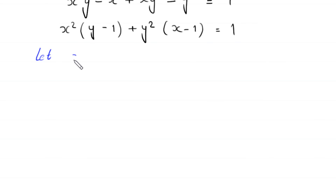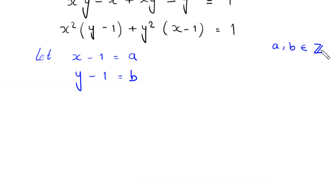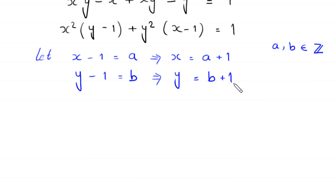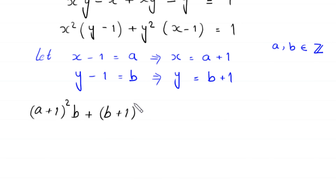Now we let x - 1 = a and y - 1 = b, where a and b are integers. This means x = a + 1 and y = b + 1. Substituting into the equation, we replace x with (a+1) and y with (b+1): (a+1)²·b + (b+1)²·a = 1.